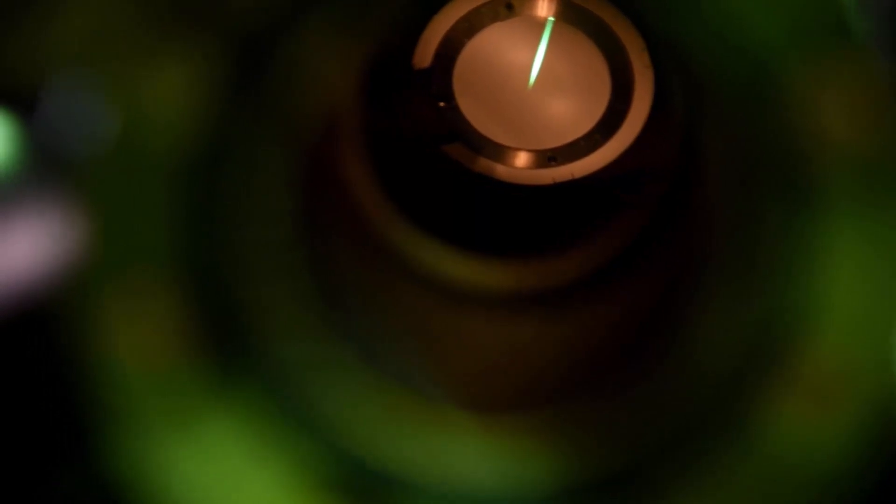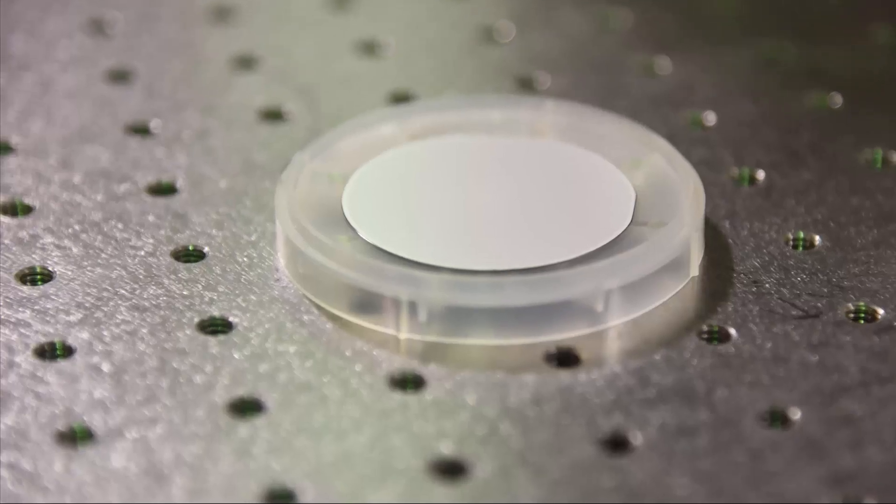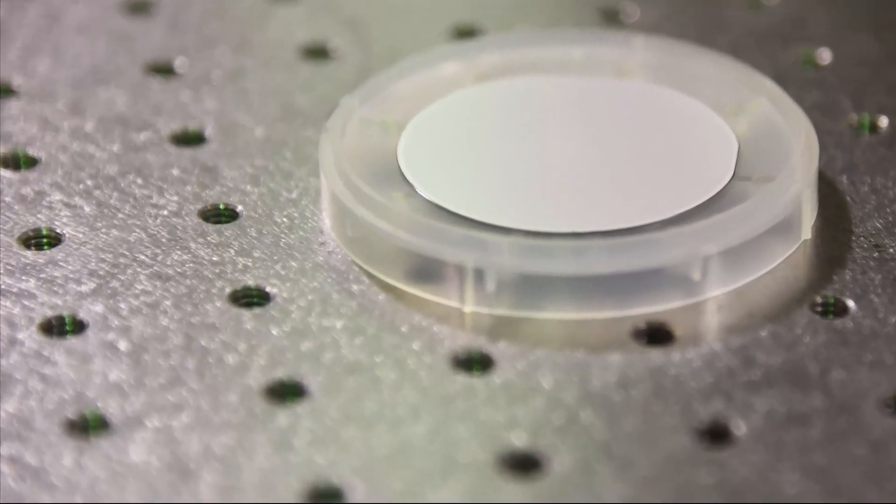At K-Space, we supply these substrates in 1, 2, 3, and 4 inch diameters. Contact us today about making your RHEED electron beam alignment easier.